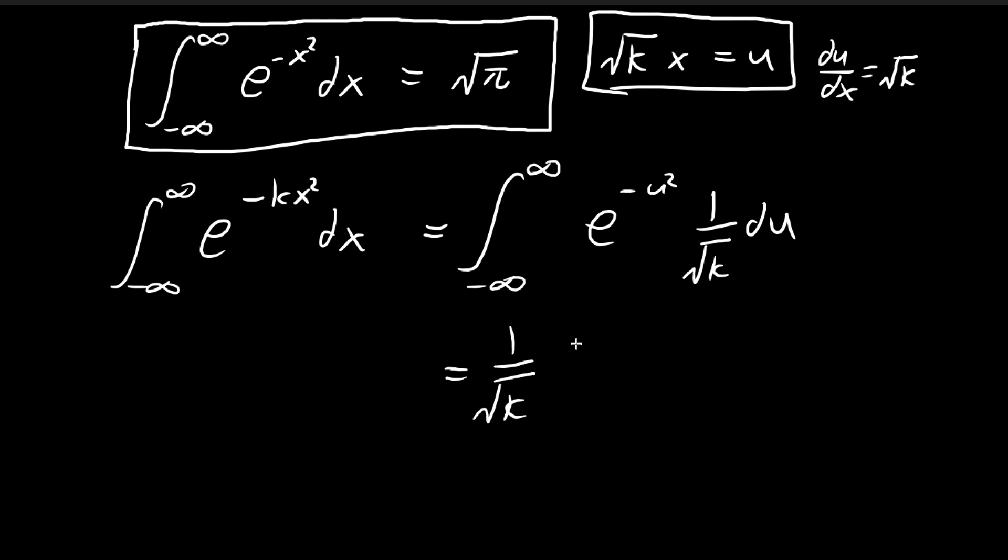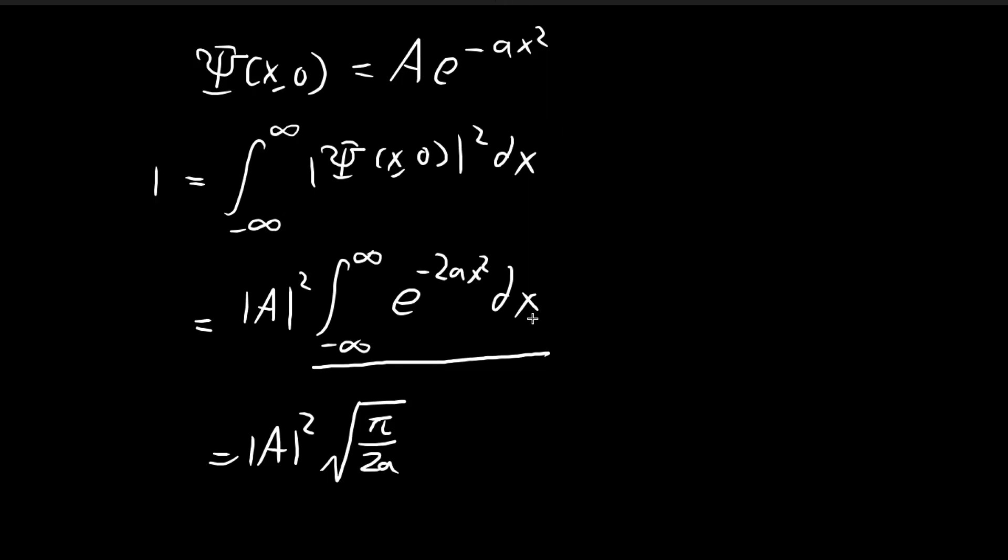As we know, you just have the Gaussian integral here inside the integral, so this is just the square root of π. This is equal to the square root of π divided by k. Using this result, I can just apply it directly to this integral. You see this is just the square root of π divided by 2a, and so this is equal to 1.